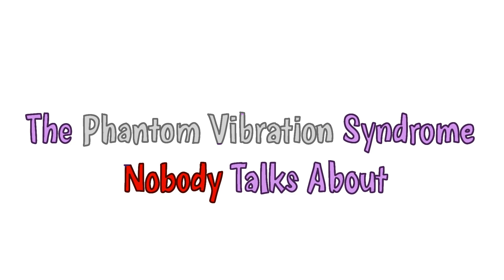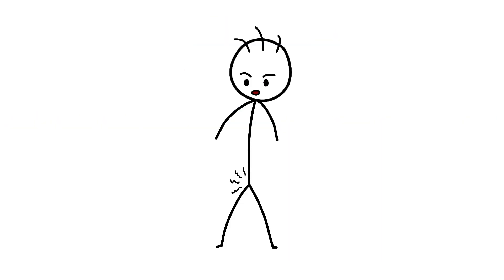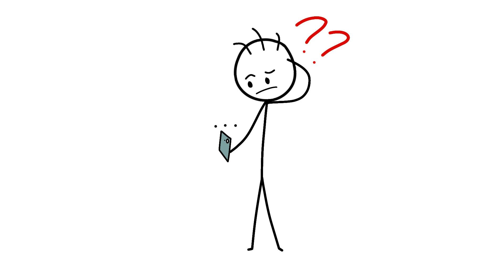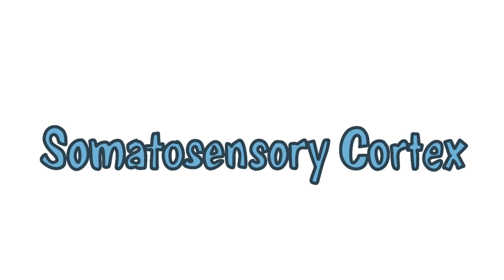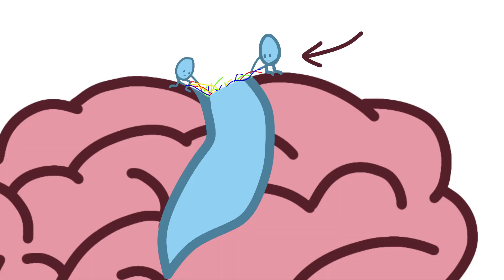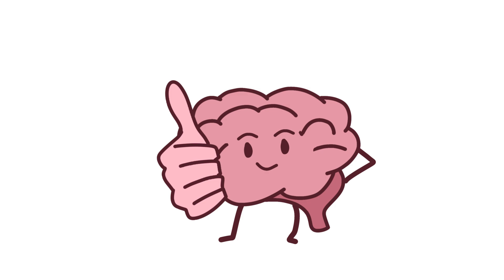The phantom vibration syndrome nobody talks about. 89% of college students experience phantom vibrations, feeling their phone buzz when it hasn't. This isn't a mental health crisis, it's neuroplasticity gone rogue. The somatosensory cortex, which processes touch, literally rewires itself to interpret any sensation near your pocket as a potential notification. Your jeans rubbing against your leg? That's a text message now, according to your brain.